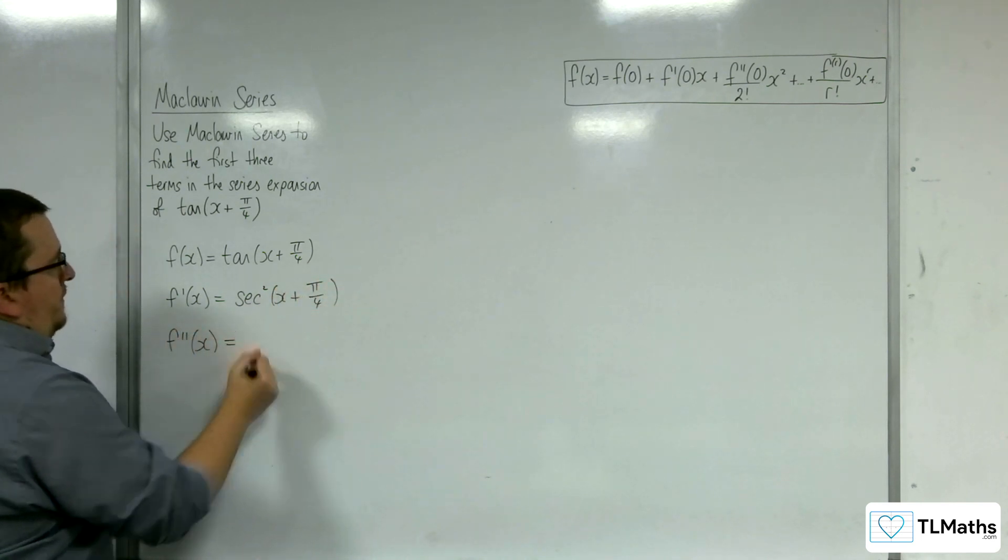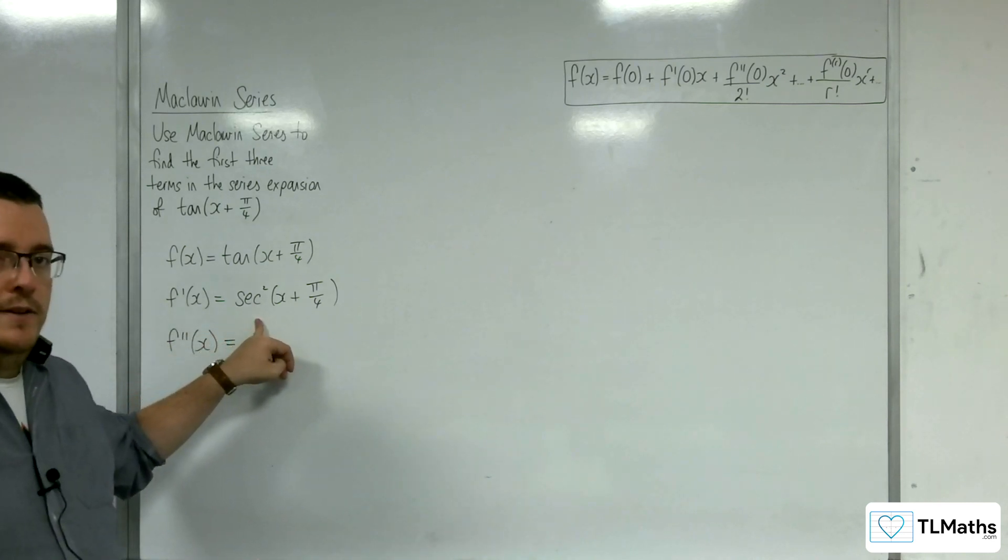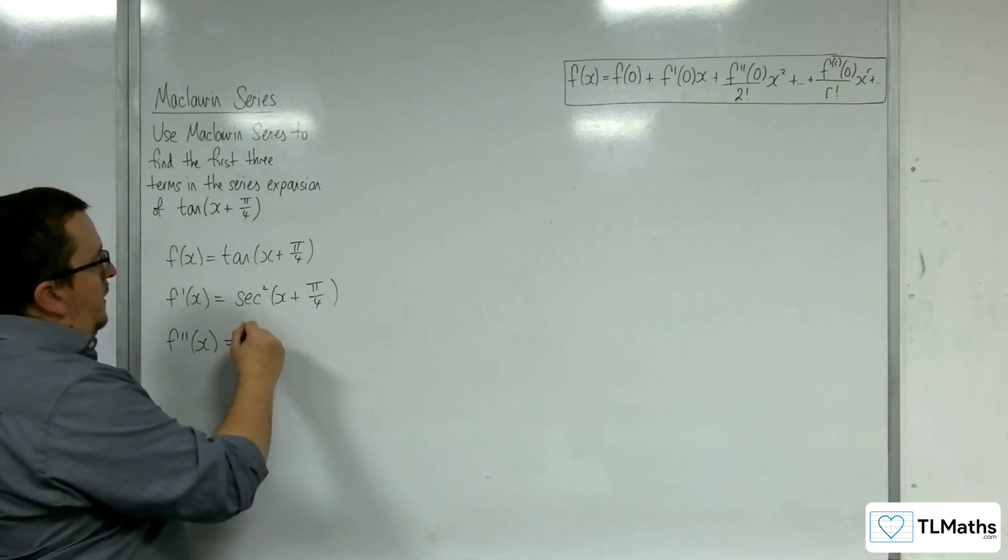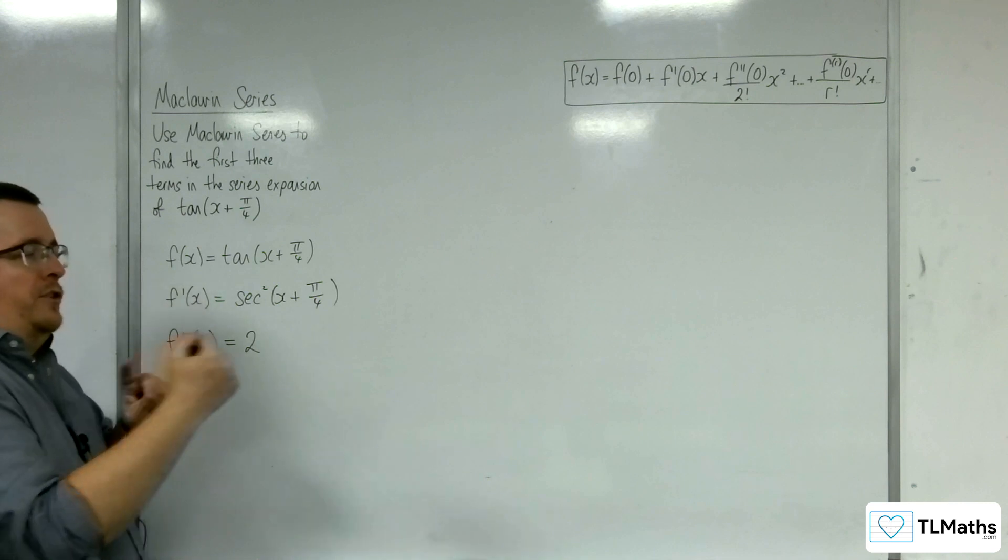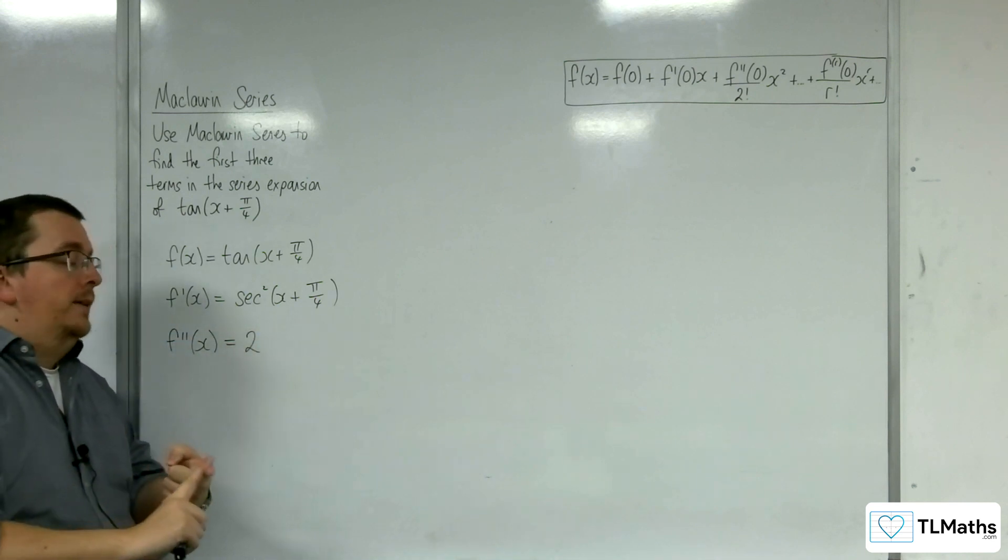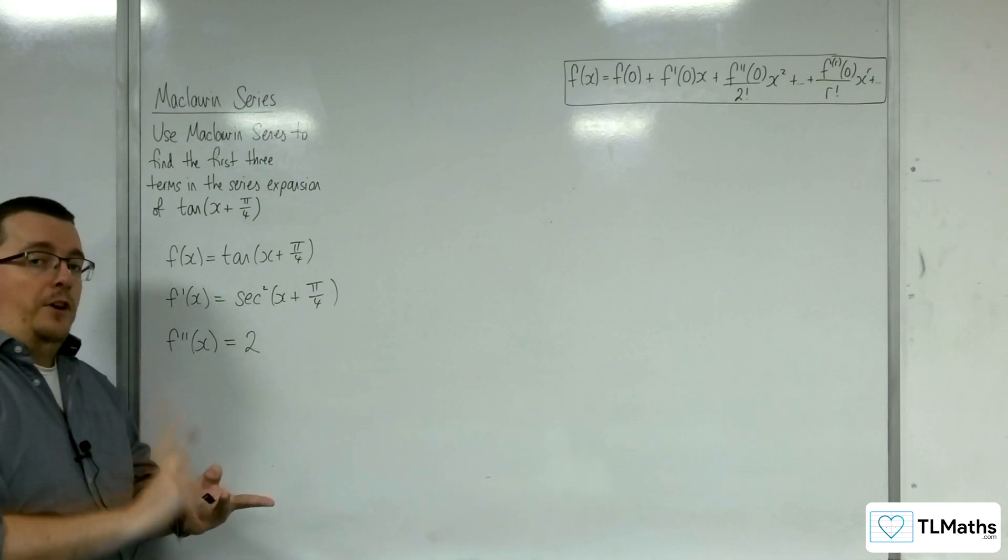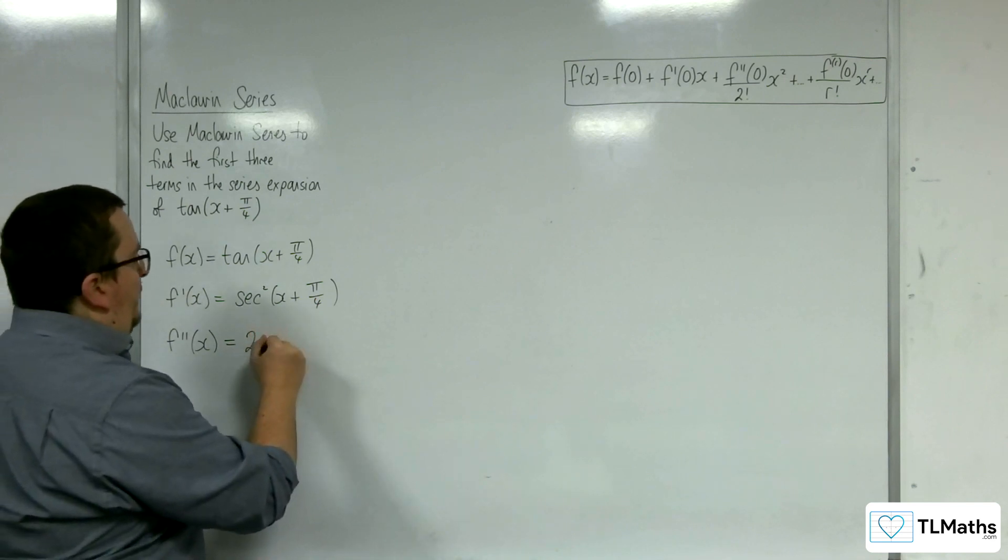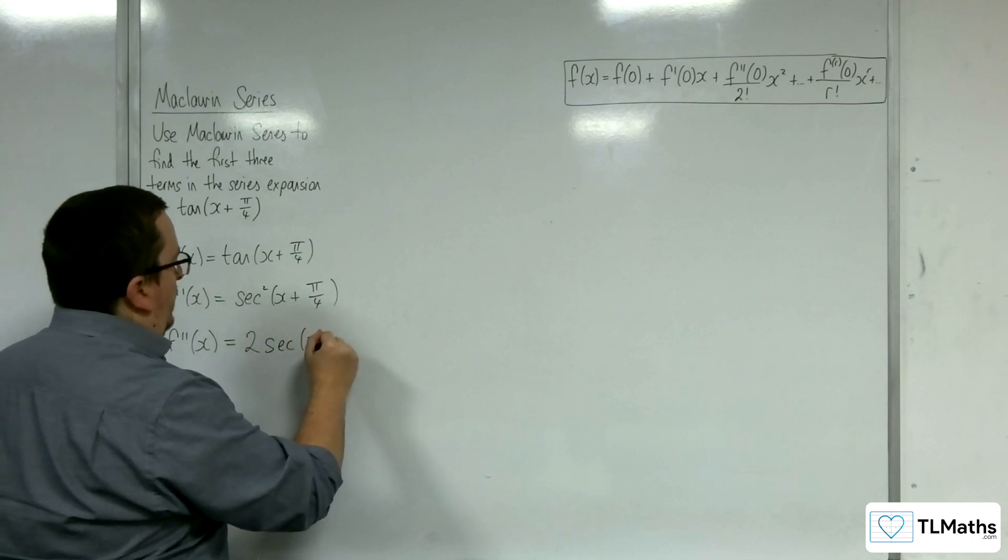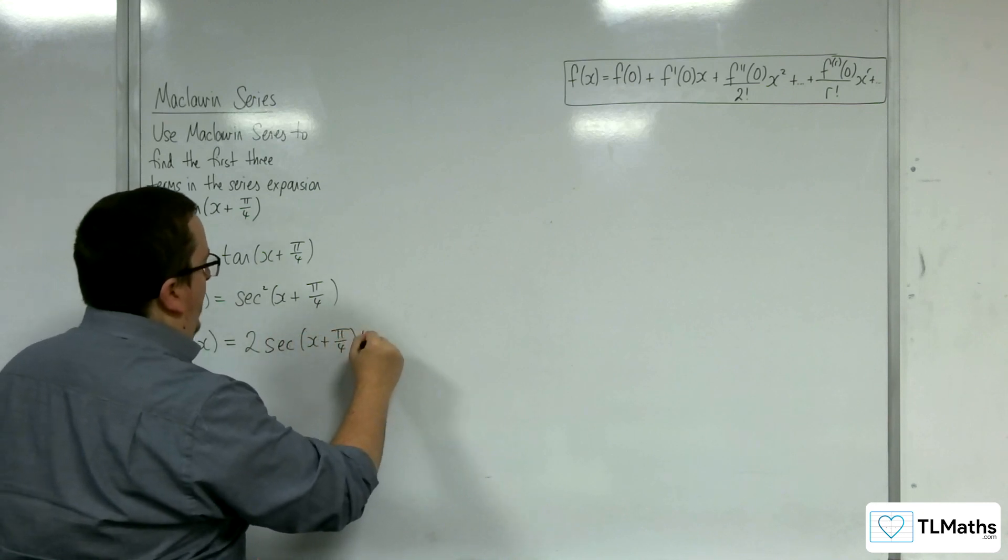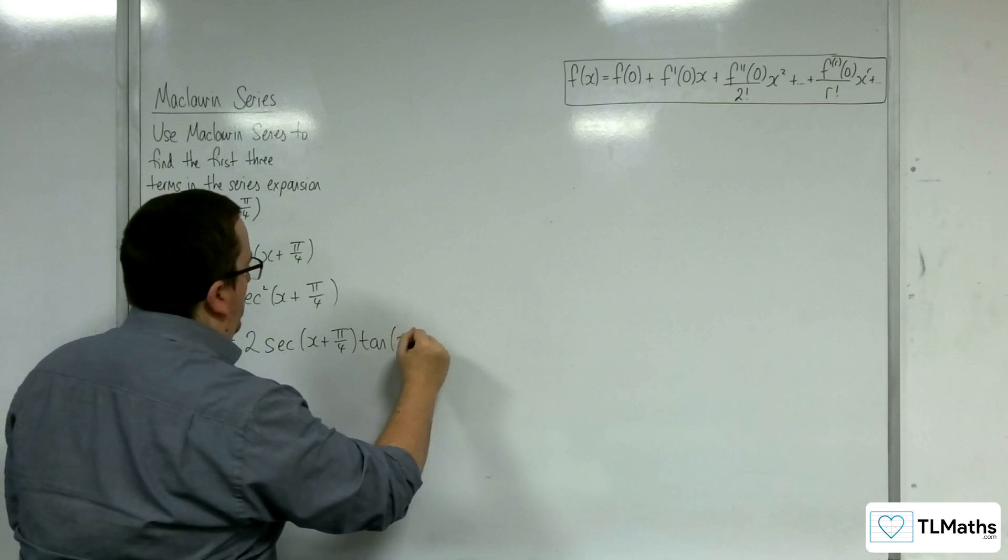So the second derivative, differentiating sec squared, I'm going to use the chain rule. So the two would come down to the front. The derivative of the inside, now the derivative of sec is in your formula booklet in the A-level math section, which is sec times tan. So this would be sec of x plus pi over 4 tan of x plus pi over 4.